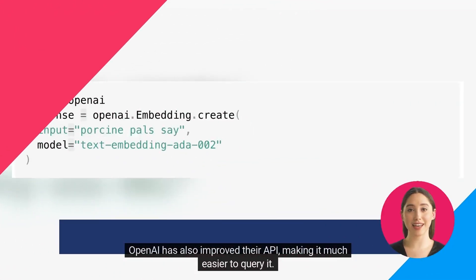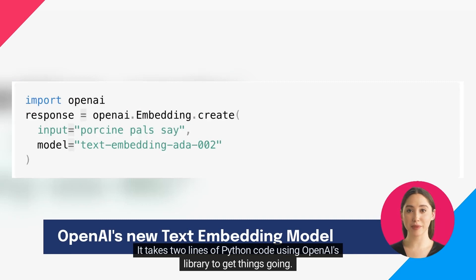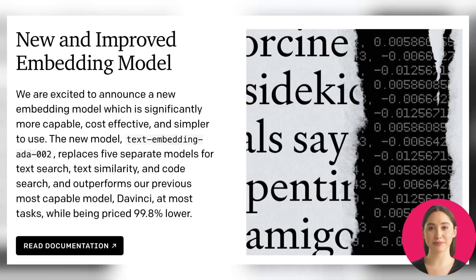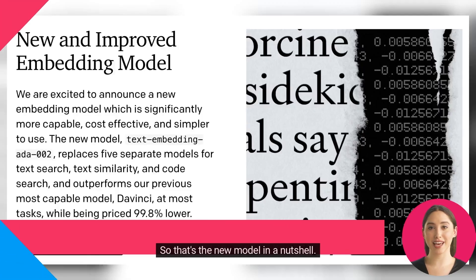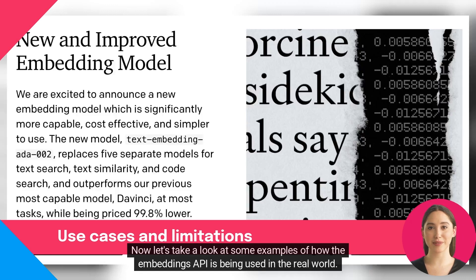OpenAI has also improved their API, making it much easier to query it. It takes just two lines of Python code using the OpenAI library to get things going. So that's the new model in a nutshell. Now let's take a look at some examples of how the embeddings API is being used in the real world.